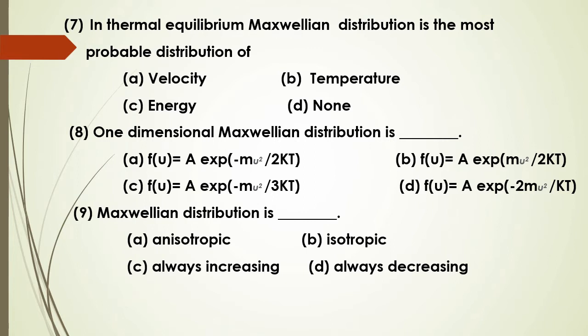In thermal equilibrium, a gas has particles and the most probable distribution of their velocities is the Maxwell distribution. The one-dimensional Maxwell distribution is f(u) = A × e^(-m u² / 2kT).